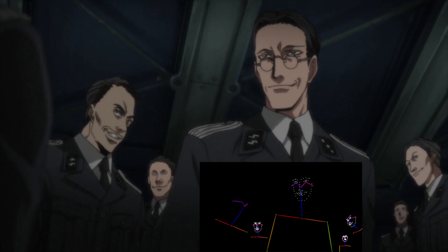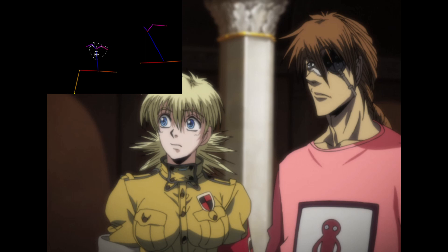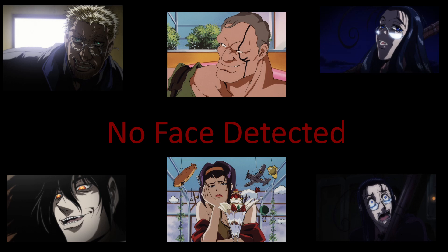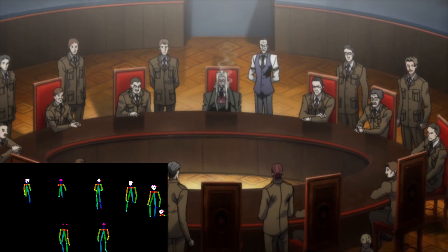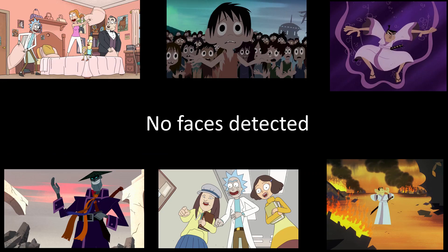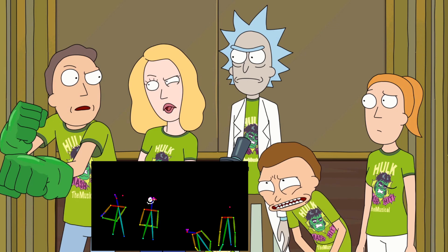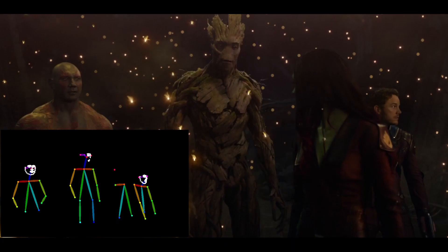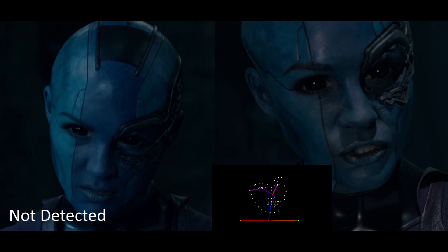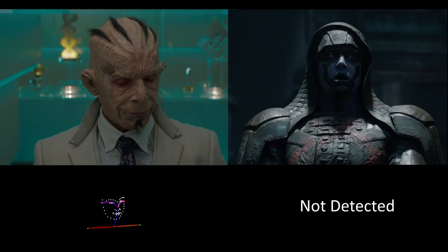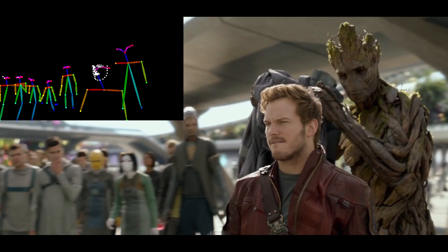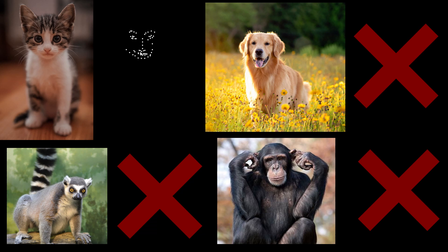For anime, face detection was a mixed bag — more realistic anime styles could get picked up, but if cartoony features are present, detection will likely fail. Interestingly, detection seemed to work better on faces that were further away instead of close-ups. For cartoon styles less realistic than anime, the chances of detection are slim — you might get a partial or distorted face. I also tested alien and robotic humanoid faces, and detection was inconsistent; the main factor seems to be whether patches of color or shading interrupt the features being mapped. Interestingly, I was actually able to detect the face of a kitten using face-only, but that was the only animal that worked.